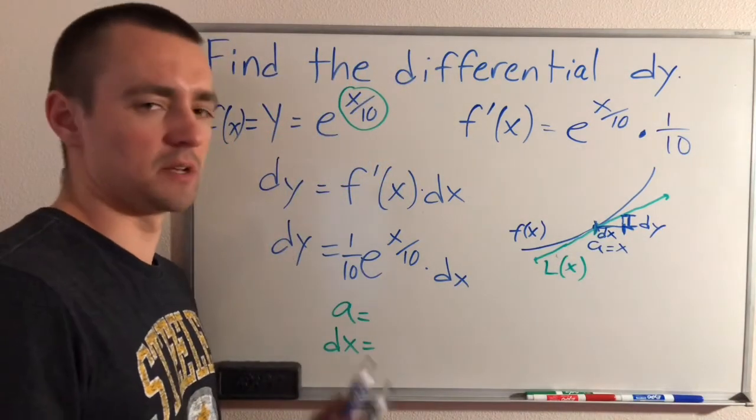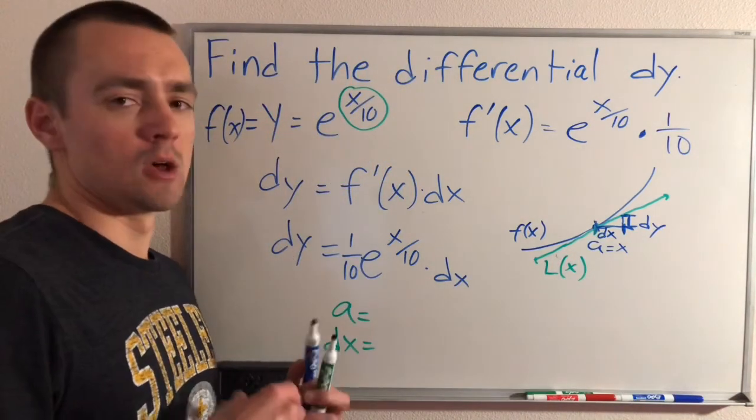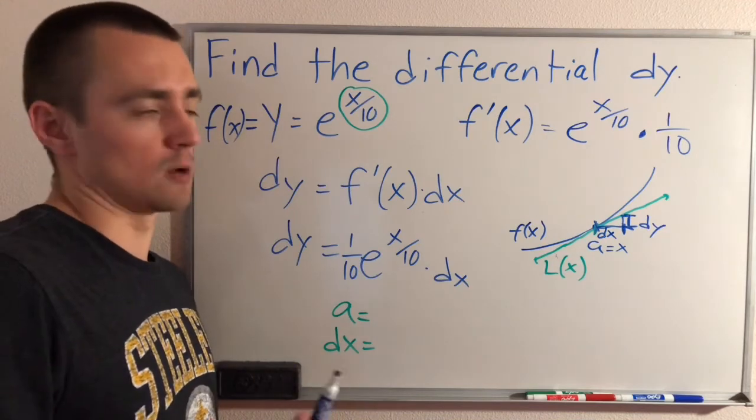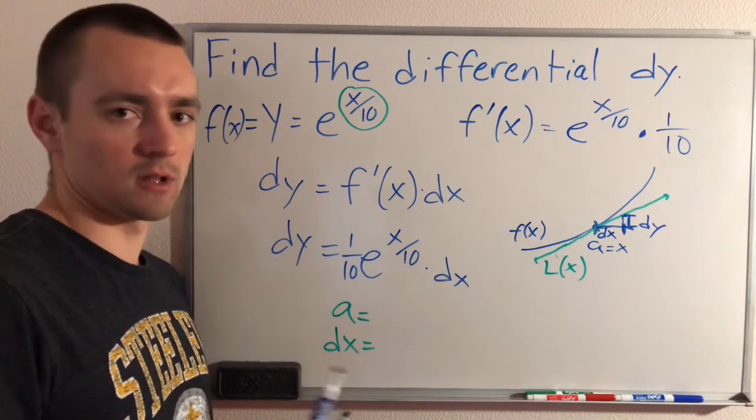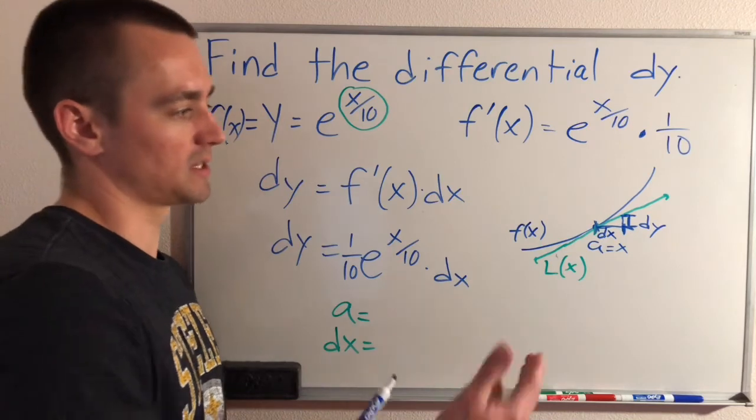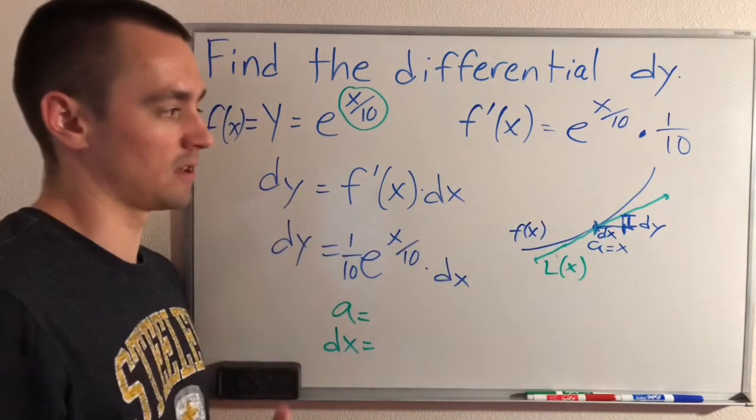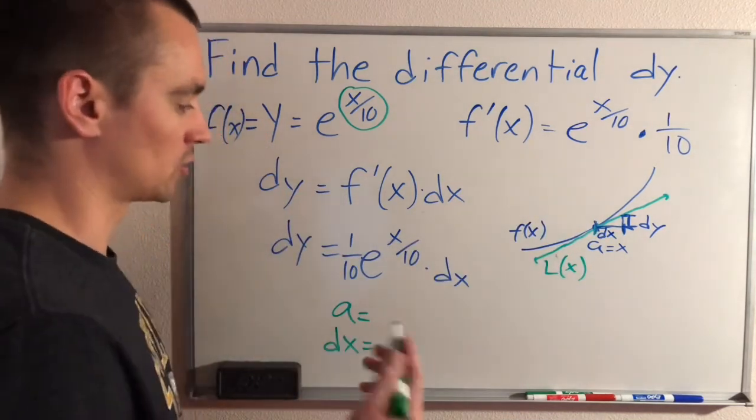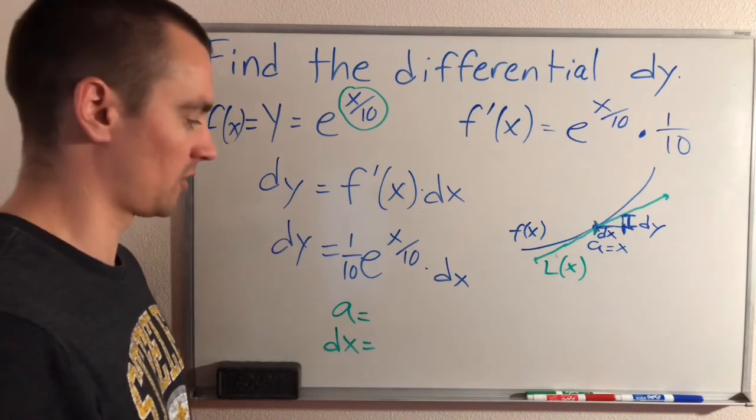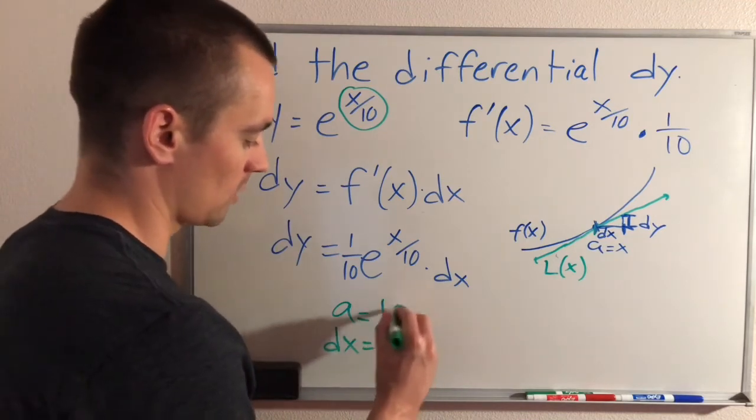It basically tells us similar information to when we find our actual linearization formula and we use that to estimate our function. That's basically the same kind of thing here. So if we have some actual a value, let's just say, for example, we're looking at when a equals 10.